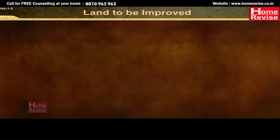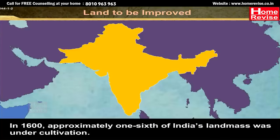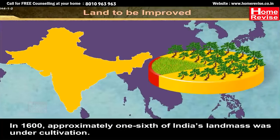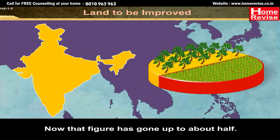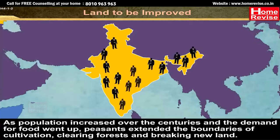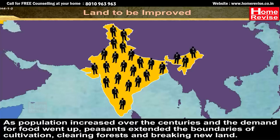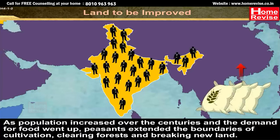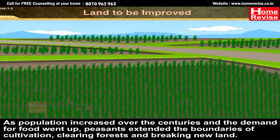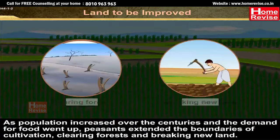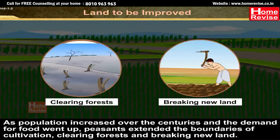Land to be improved. In the year 1600, approximately one-sixth of India's land mass was under cultivation. As population increased over the centuries and the demand for food went up, peasants extended the boundaries of cultivation, clearing forests and breaking new land.